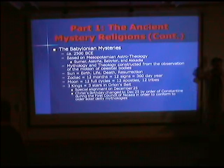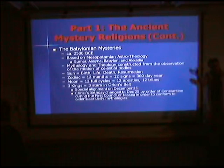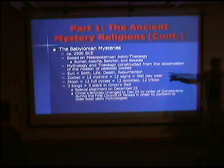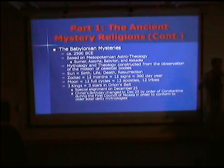Mythology and theology were constructed from the observation of the motions of the celestial bodies — this is the core foundation of the astro-theological myth structure. For example, the sun as it travels across the sky was used in the myth structure to represent birth, life, death, and resurrection: birth as it rises in the east in the morning; life as it passes through the phases of the sun — infancy, middle age, old age; death as it sets in the west; and then resurrection twelve hours later, starting the whole cycle over again.